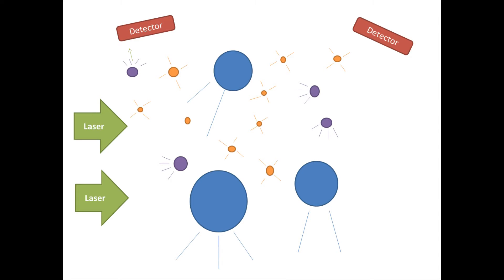Laser light is directed onto the particles and the light scatters. The observed intensity of the scattered light is a result of the interference of light scattered by each element. Thus, it will depend on the relative positions of the elements.